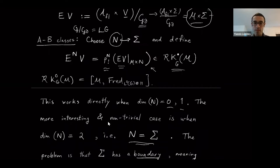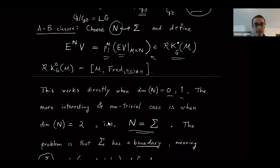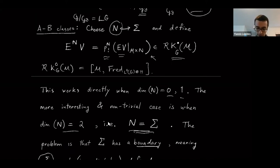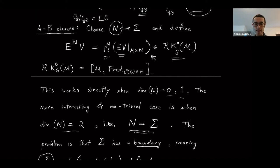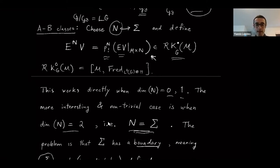This literally works if N is either zero or one-dimensional, but the most interesting case is when N is two-dimensional — when it's the surface itself. In that case what I wrote down doesn't immediately make sense, because the surface has a boundary. Usually when you take a wrong-way map — when you push forward over a manifold — that's like taking an index, and when your manifold has a boundary the index doesn't immediately make sense. If you have a nice closed manifold then you can do that, but with a boundary you have a problem.